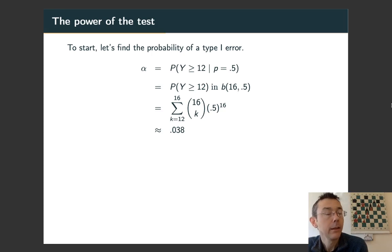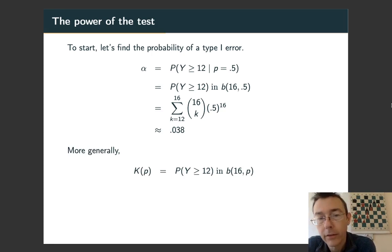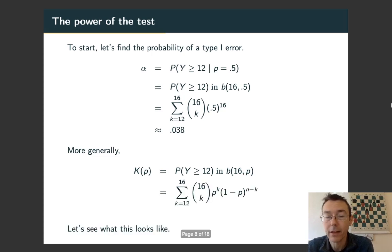Let's generalize this. The power function is going to be computed exactly in the same way, except now we don't assume the null hypothesis. Instead, we say, what's the probability of rejecting the null hypothesis for different true values of p? So we're now in B(16, p) instead of B(16, 0.5). We compute it exactly the same way: take the binomial PMF from 12 to 16, add all those up, and we get a function of p.